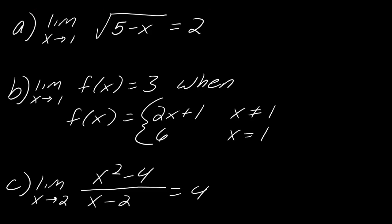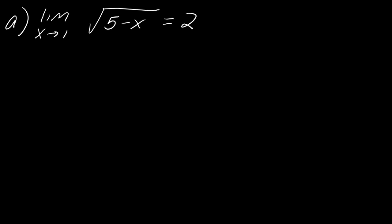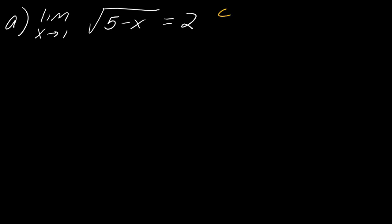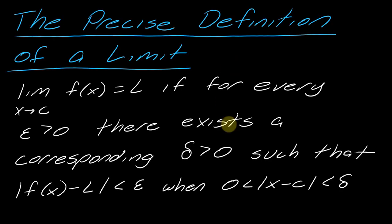So these are the three limits that we're going to look at. We're basically looking for what is the delta that goes with these limits. Let's start with this first one. Notice how the limit is set up — the precise definition tells me my c, my f of x, and my L. So in this particular problem, my c is 1, my L is 2, and my f of x is the square root of 5 minus x. We are looking for the delta that goes with this totally non-specific epsilon.